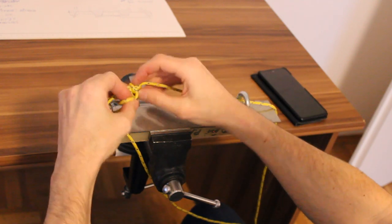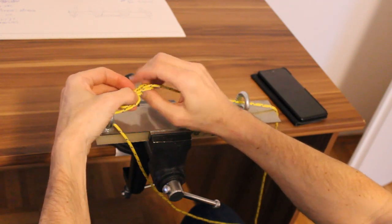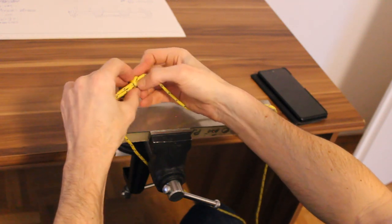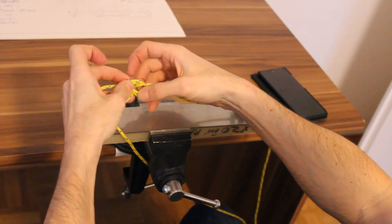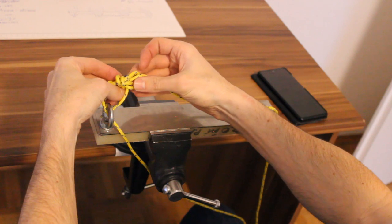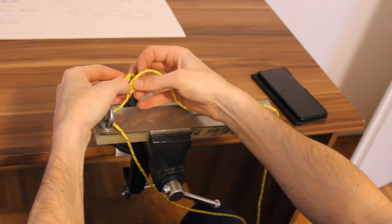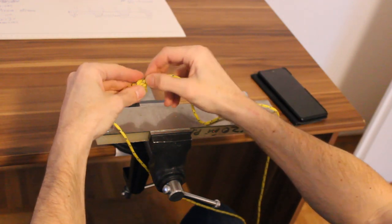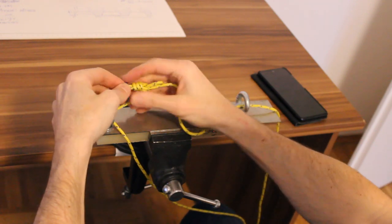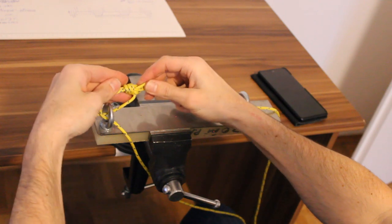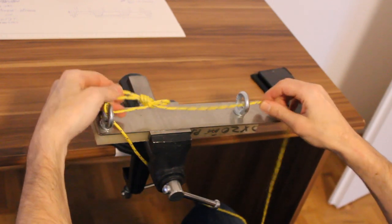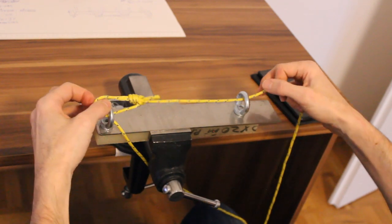Now, you can, if you want to make this ultra secure, you can make your end a bit longer, and then follow this line around and through, and then you have the what's called the Yosemite, the Yosemite finish to your bowline. There's the bowline, nice and tight.